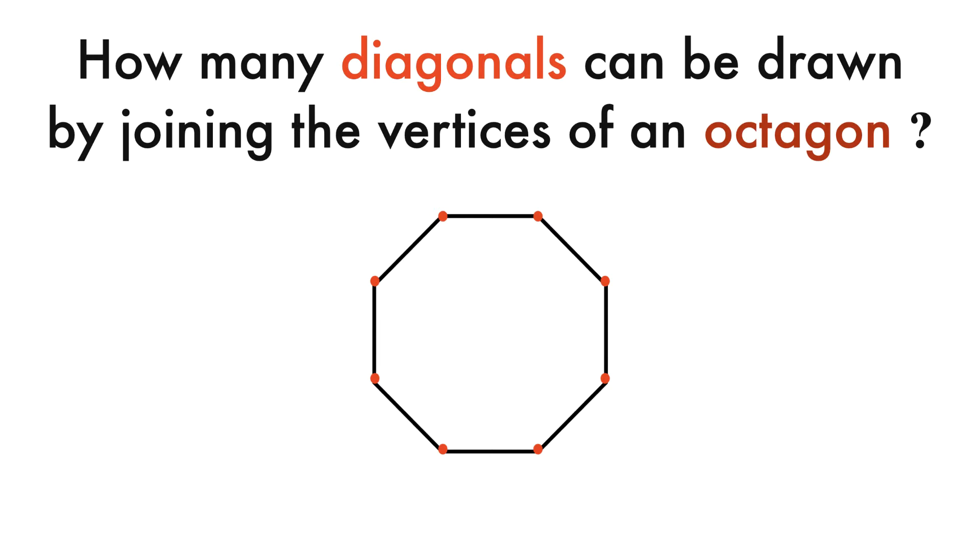How many diagonals can be drawn by joining the vertices of an octagon? Let me repeat the question. How many diagonals can be drawn by joining the vertices of an octagon?